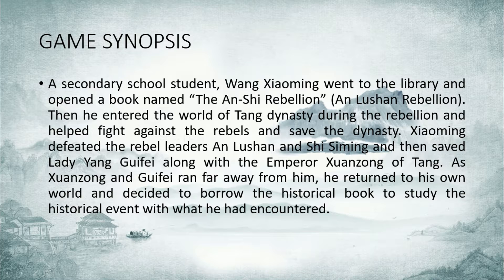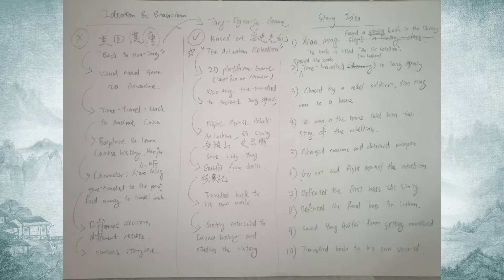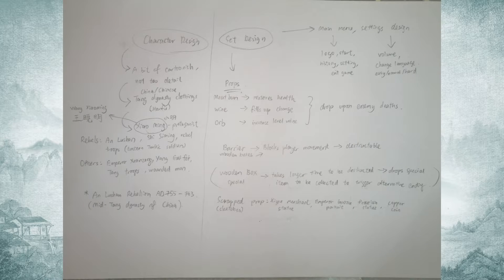As the emperor and Gui Fei ran away from danger, Xiaoming returned to his own modern world, back in the library. He found the story interesting and decided to read the book to study the history event and what he had encountered when he was in the ancient world.